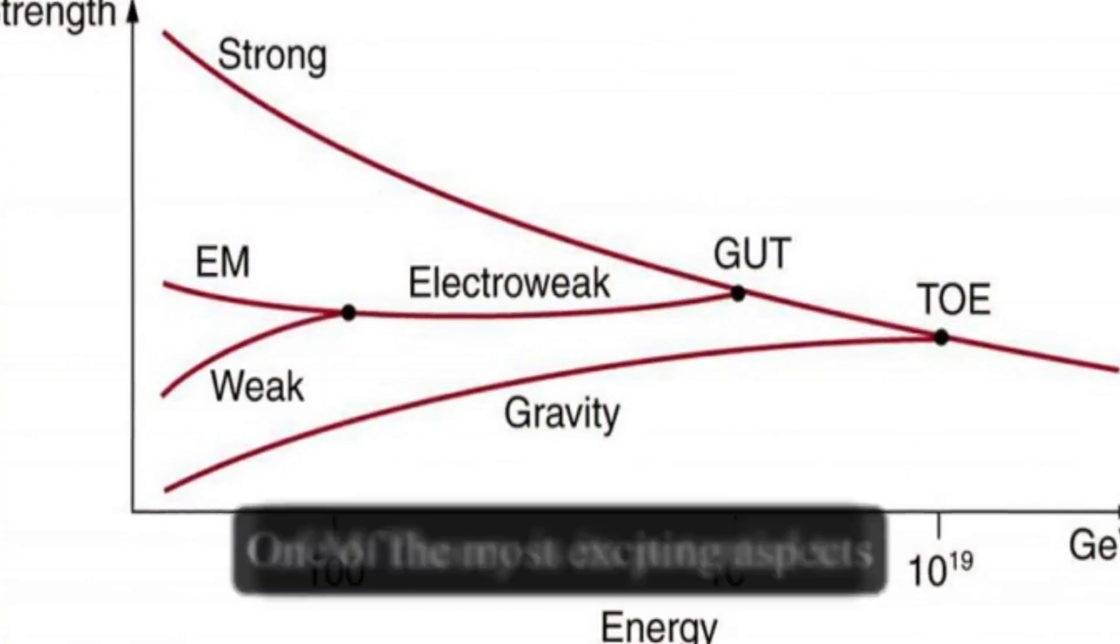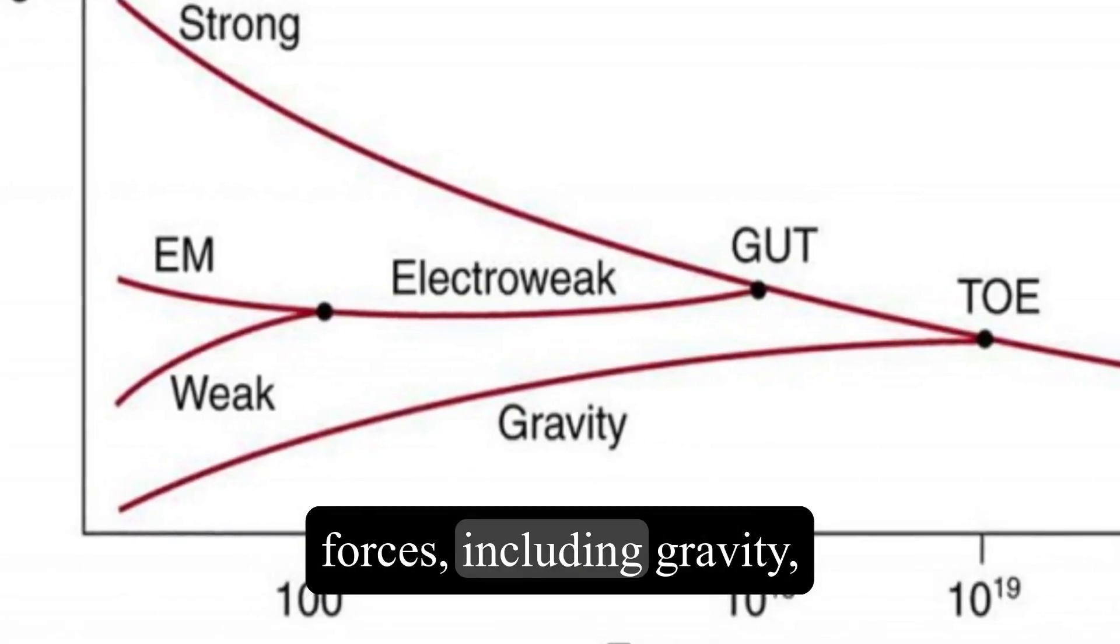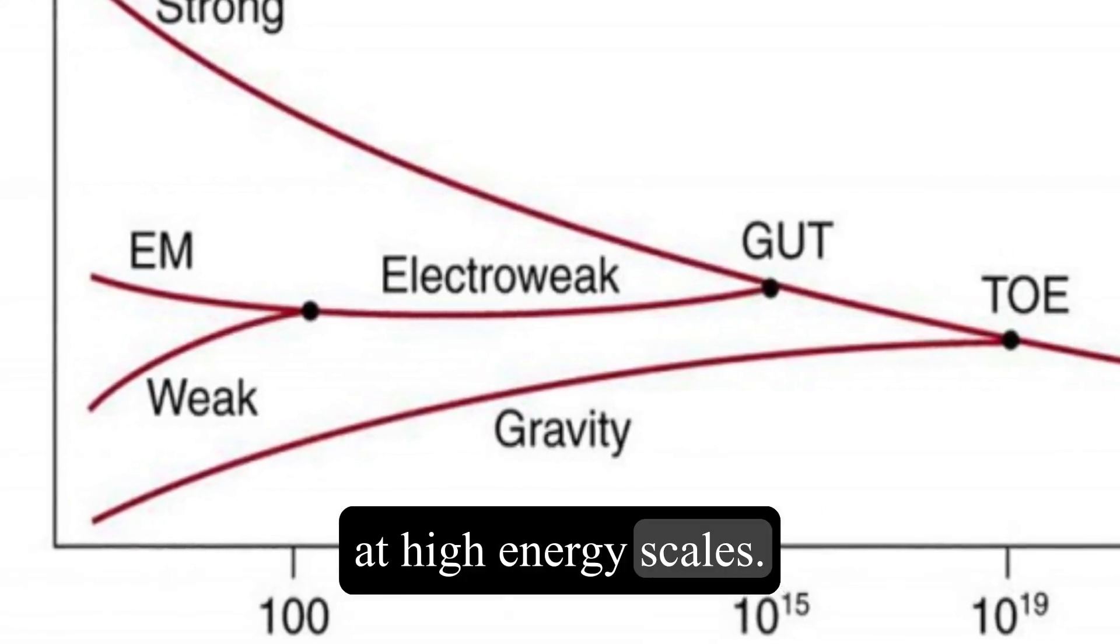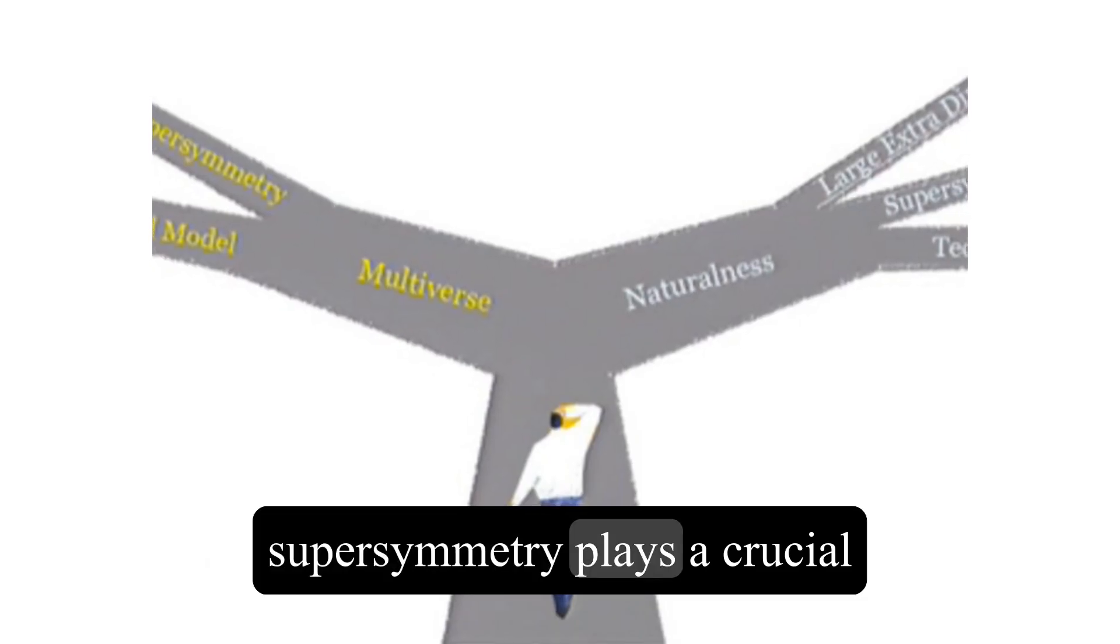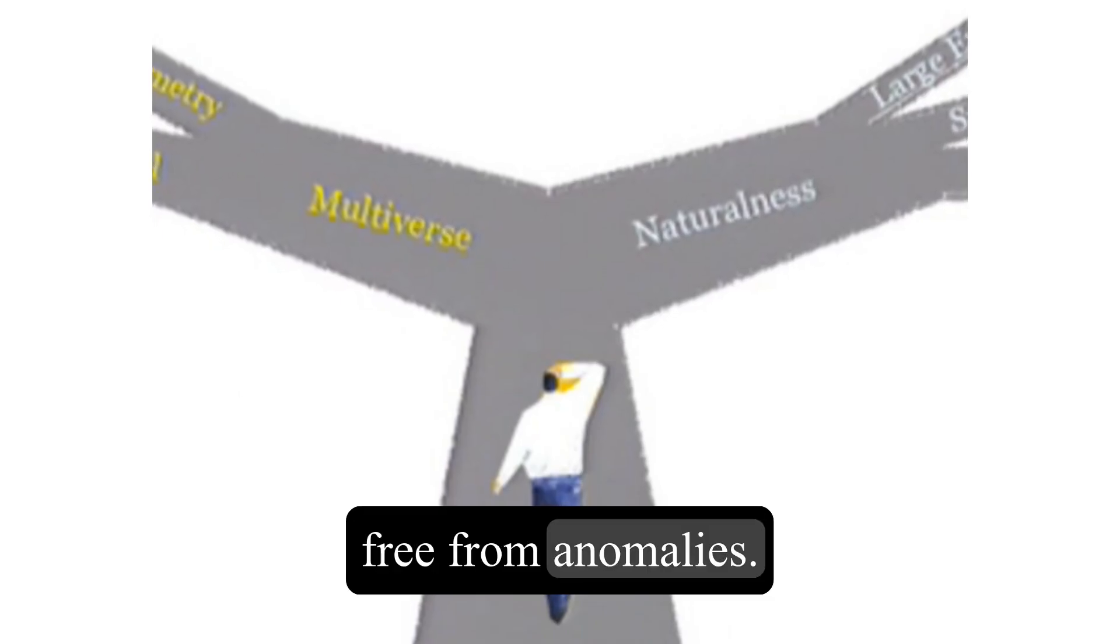One of the most exciting aspects of M-theory is its potential to describe the unification of all forces, including gravity, at high energy scales. In this context, supersymmetry plays a crucial role by ensuring that the theory remains consistent and free from anomalies.